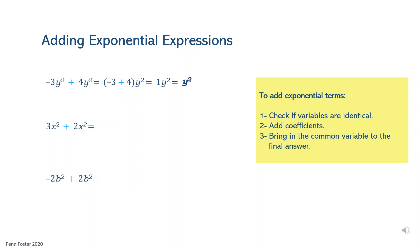For the second problem, x squared is the variable part of both exponential terms. Add 3 and 2, that's 5, then bring in the common variable next to the sum coefficient. The answer is 5x squared.